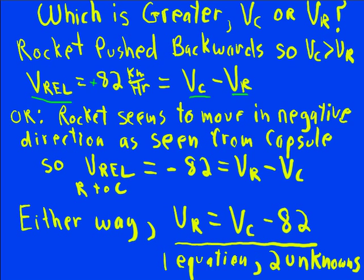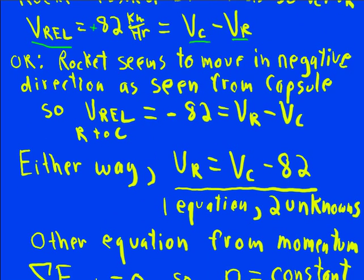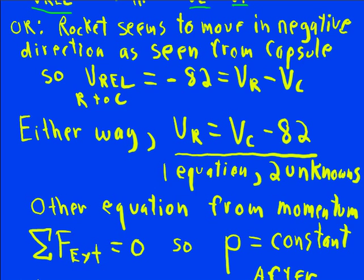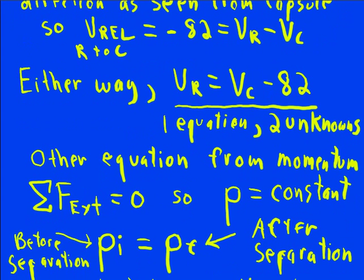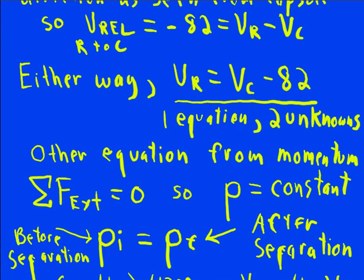So we need another equation, and we know that other equation is going to be conservation of momentum. The sum of the external forces is zero. The push from the springs or the explosion was an internal force, so momentum is constant. And so the momentum before the separation equals the momentum after the separation.